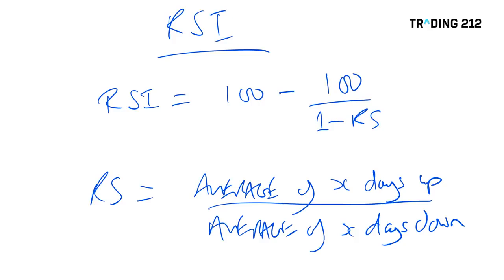To put that into plain language, let's say we're using a 10-day RSI. It looks at over the last 10 days how many days did the market finish up, adds the total points gained on those up days and divides by 10 — giving an average of the points gained when the market went up. The inverse applies on the down side: points lost over those down days are added up and divided by 10. Once plotted on the chart, we always have a value between 0 and 100%.